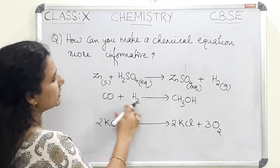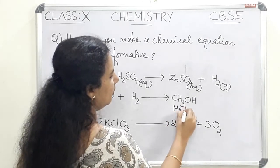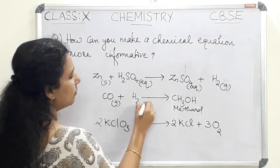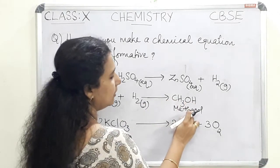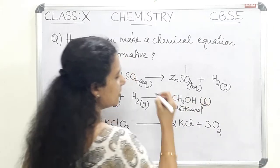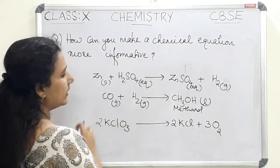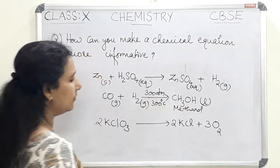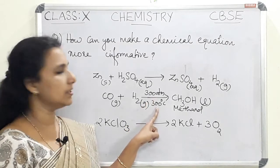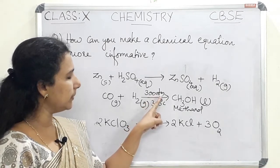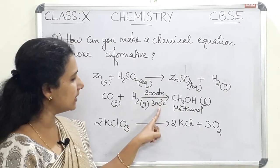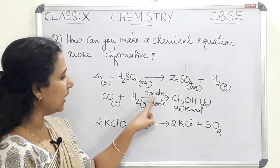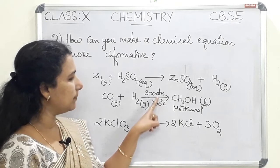In this case, carbon monoxide and hydrogen produce methanol. Carbon monoxide is a gas, so we write (g). H₂ is also a gas. CH₃OH is methanol — it is an alcohol and a liquid, so we write (l). There is also a reaction condition: 300 atm pressure and 300 degrees Celsius, which we indicate above and below the arrow.